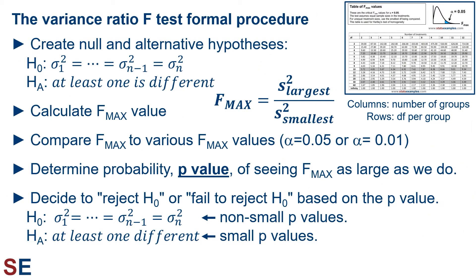Here's the formal procedure. First, we create our null and alternative hypotheses. For an Fmax test, the null hypothesis is that the population variances are all equal to one another, and the alternative hypothesis is that at least one is different from at least one other. Then we calculate our Fmax value, which is the largest of the set of variances divided by the smallest of the set of variances.